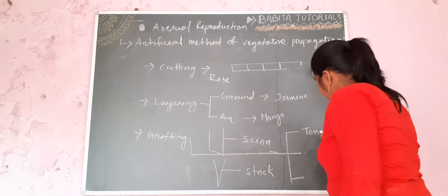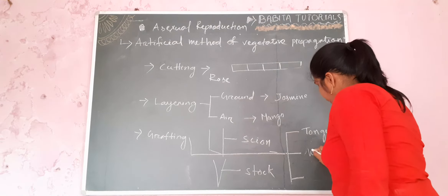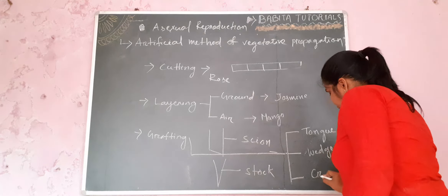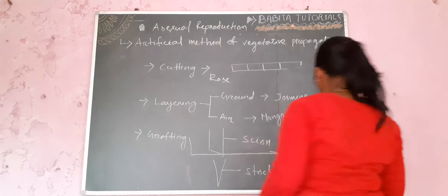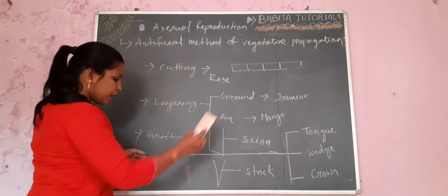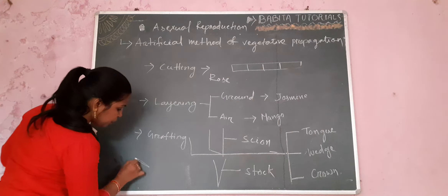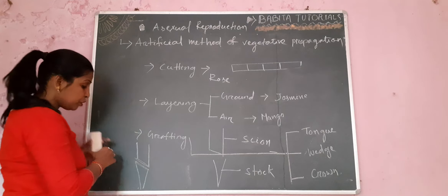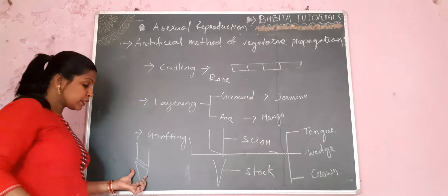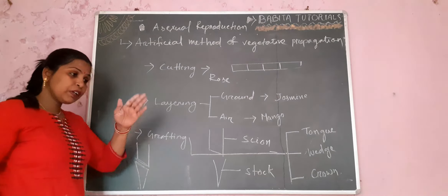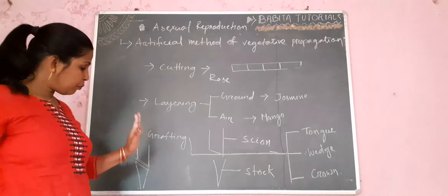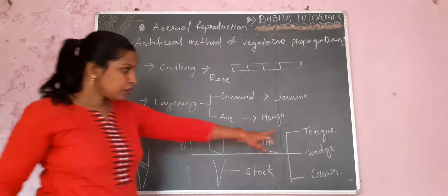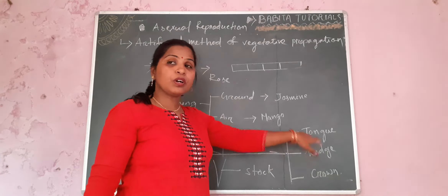The three types are: tongue grafting, wedge grafting, and crown grafting. In the case of tongue grafting, the diameter of the stock and scion will be the same. It will be cut at an oblique angle and both the stock and scion will be fixed with each other. That type of grafting is known as tongue grafting.